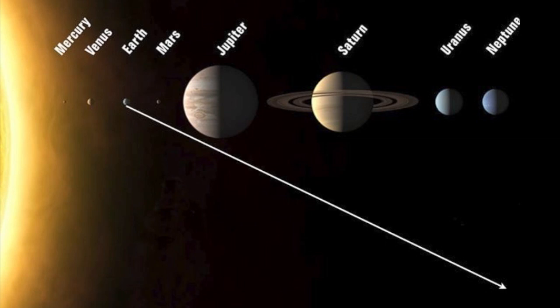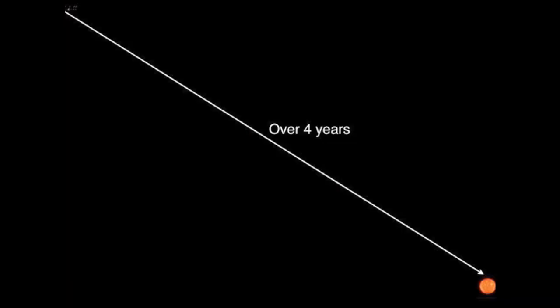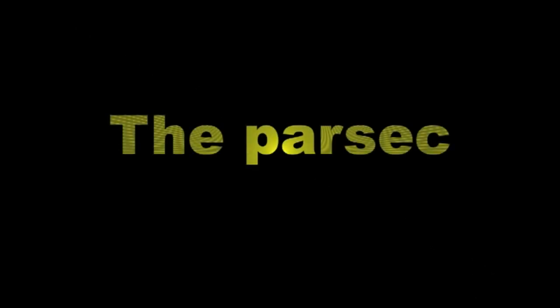It would take about four hours to reach the outermost planet, Neptune. In one year, it would cover about 10 trillion kilometres, taking four years to reach the next nearest star to our sun.